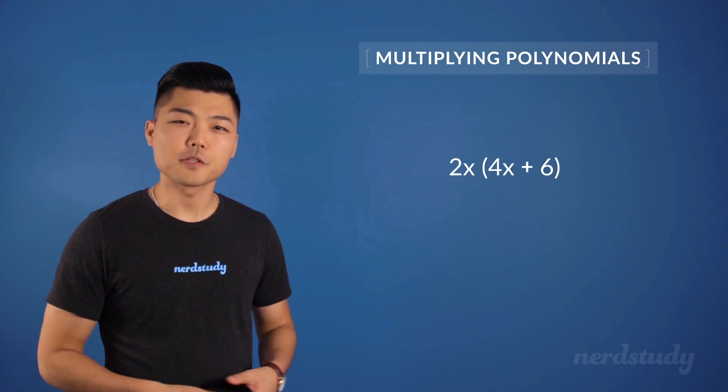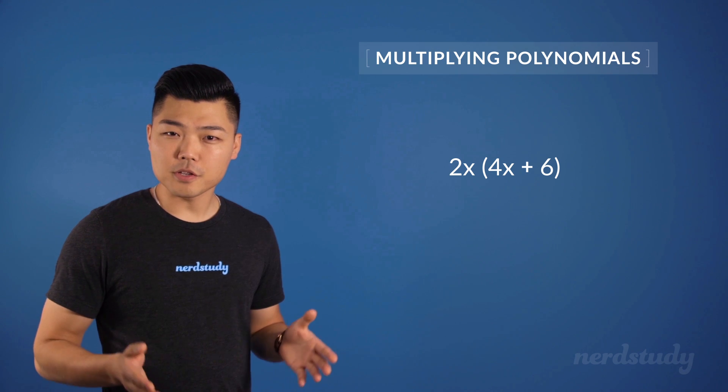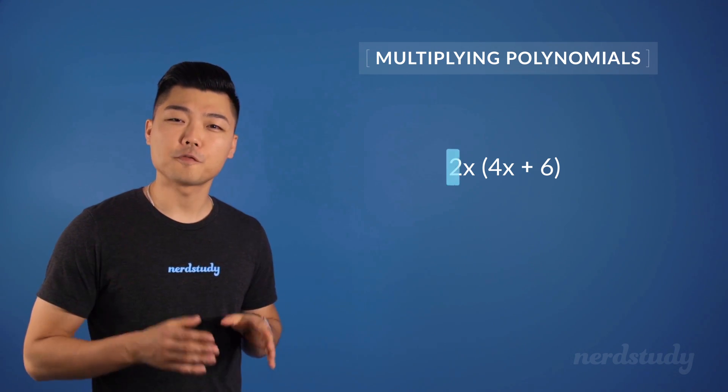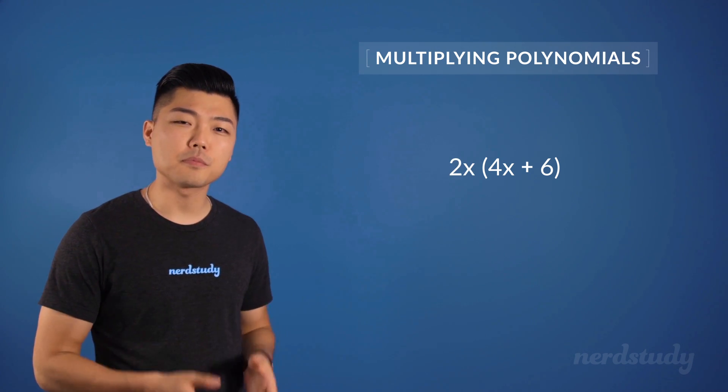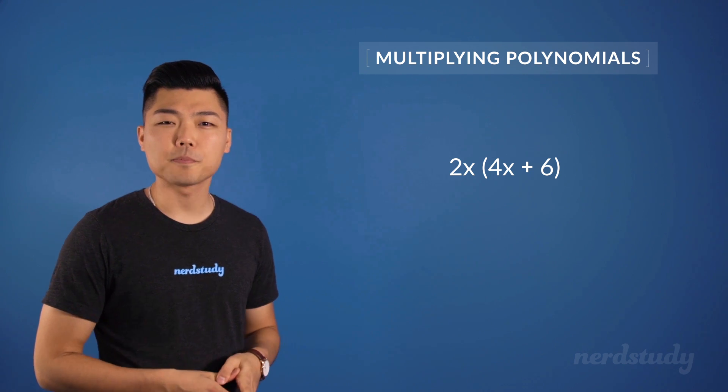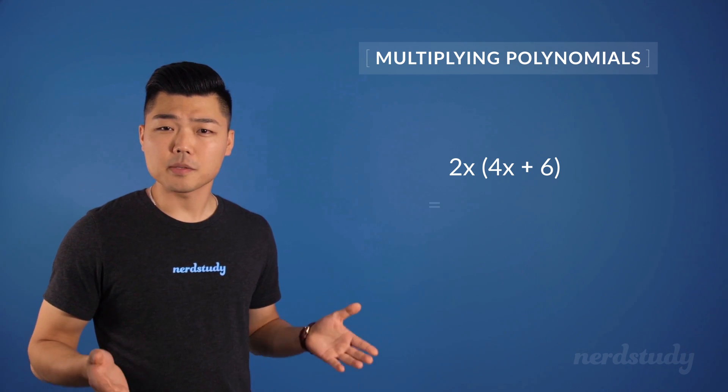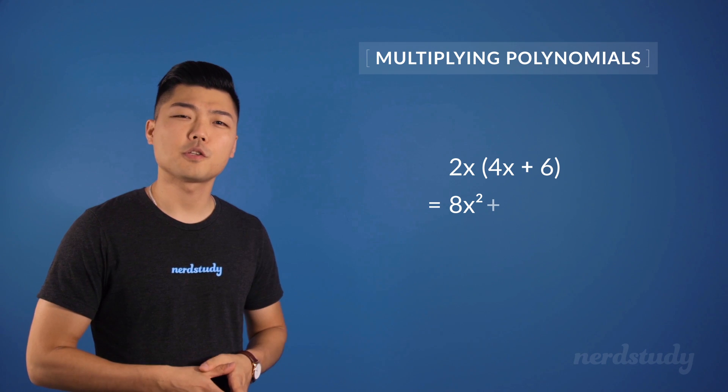So we already know how to multiply something like this. All we need to do here is distribute the multiplication of 2x onto both terms inside the brackets. So what we get is 8x squared plus 12x.